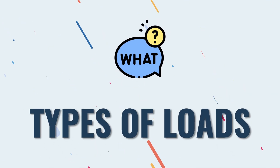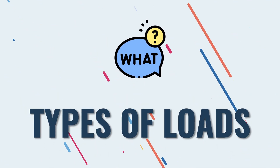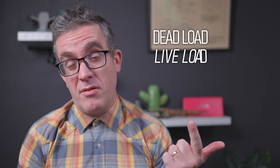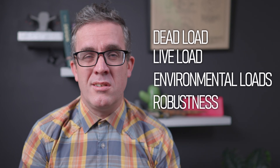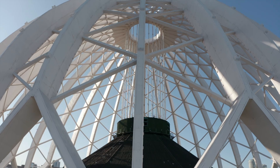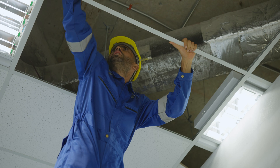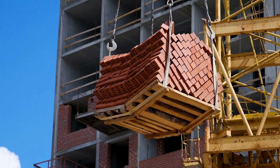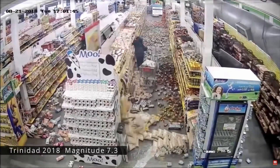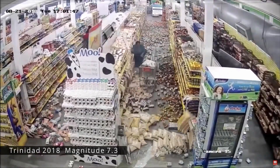Let's break down the different types of loads you need to consider. Each code will consider them slightly differently, but the definitions and terms are very similar. We have dead load, live load, environmental loads, and robustness. These are a combination of self weight, elements attached to the structure, materials coming in and out of the building, and environmental factors such as wind and earthquake.